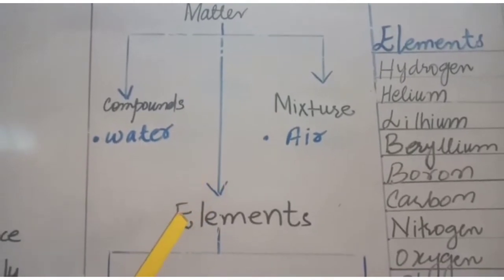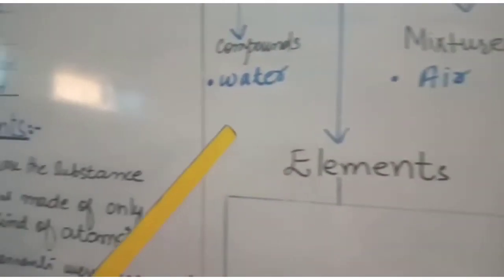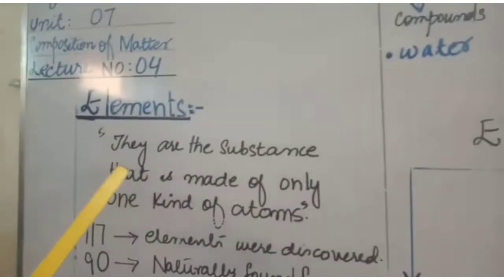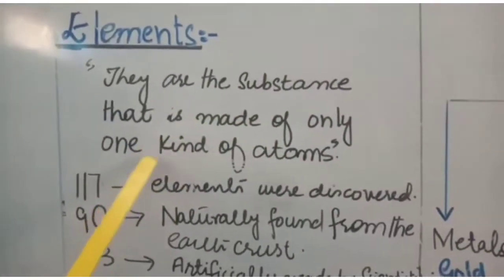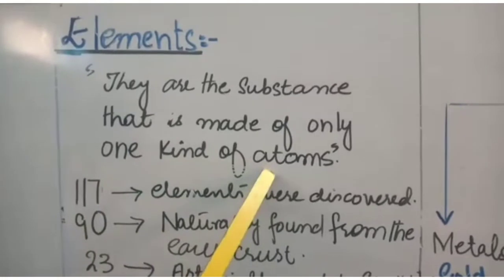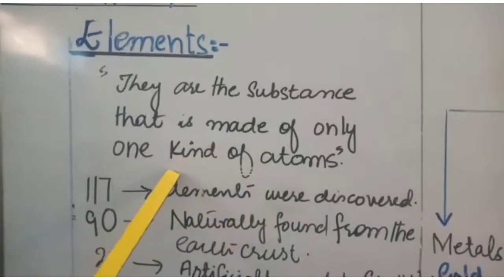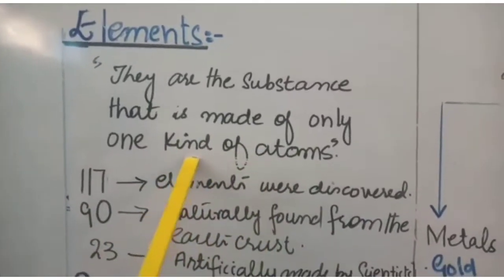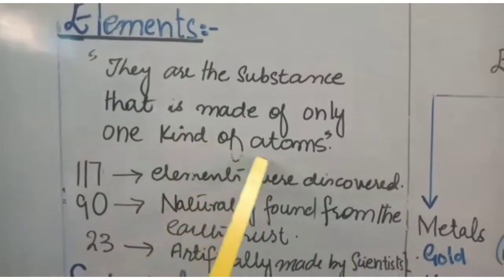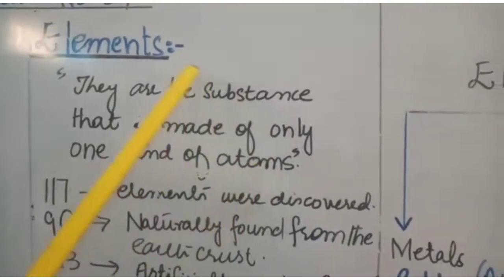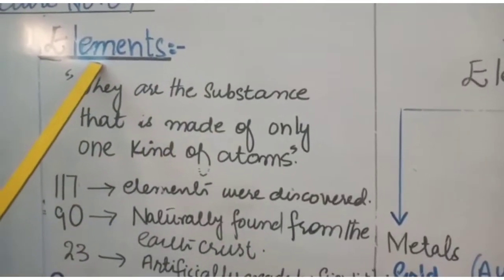Today our topic is elements. Elements is a type of matter. They are the substances that are made of only one kind of atoms. The substance whose atoms all have the same atomic number is called an element.